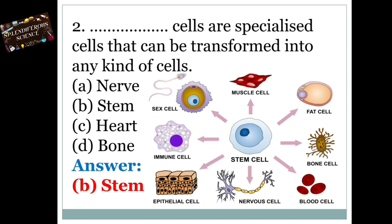Second one: dash cells are specialized cells that can be transformed into any kind of cells. Option A: Nerve. Option B: Stem. Option C: Heart. Option D: Bone. The answer is Option B, Stem.